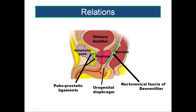Next, inferiorly the prostate is related to the urogenital diaphragm. The urogenital diaphragm contains the transverse perinei muscles and the sphincter urethrae, and the superior layer of the urogenital diaphragm will separate these muscles from the prostate. That covers the anterior, posterior, superior, and inferior relations of the prostate.